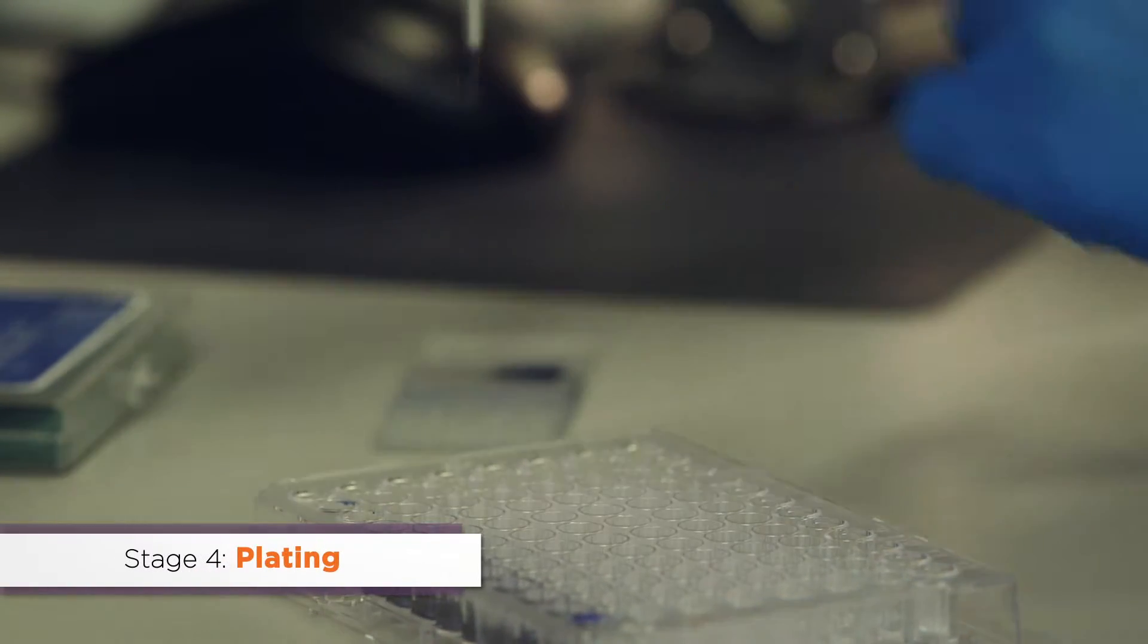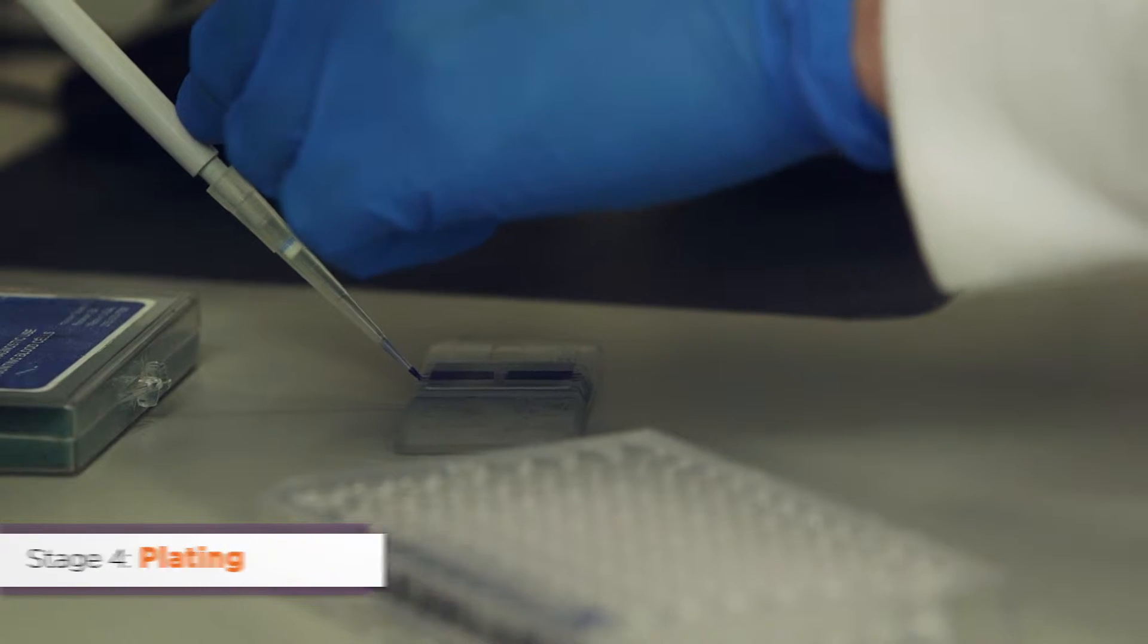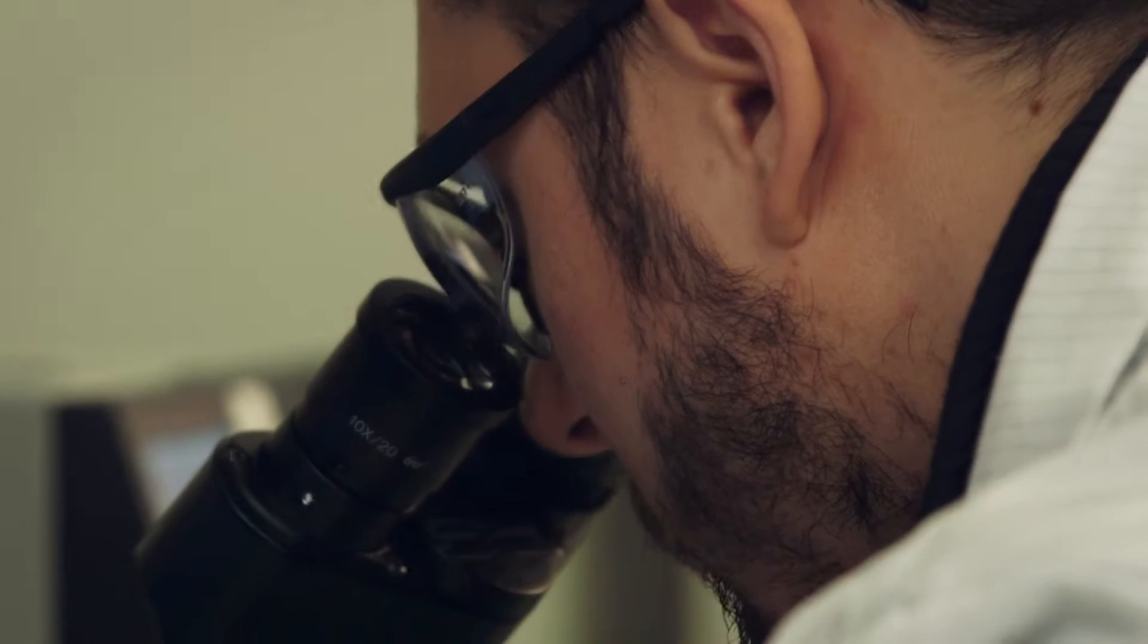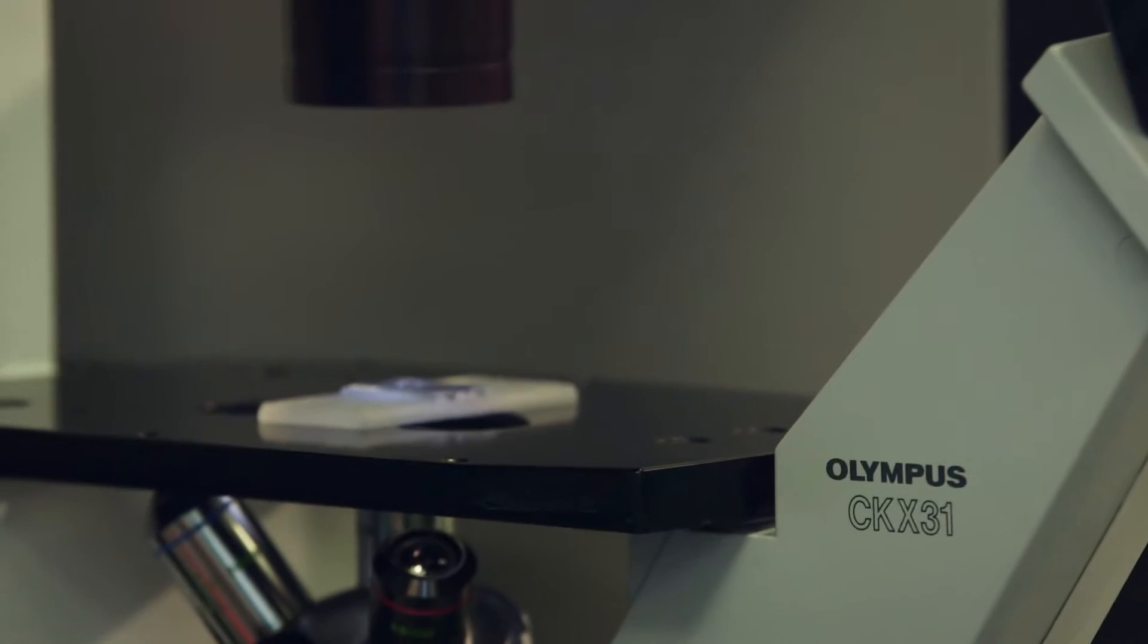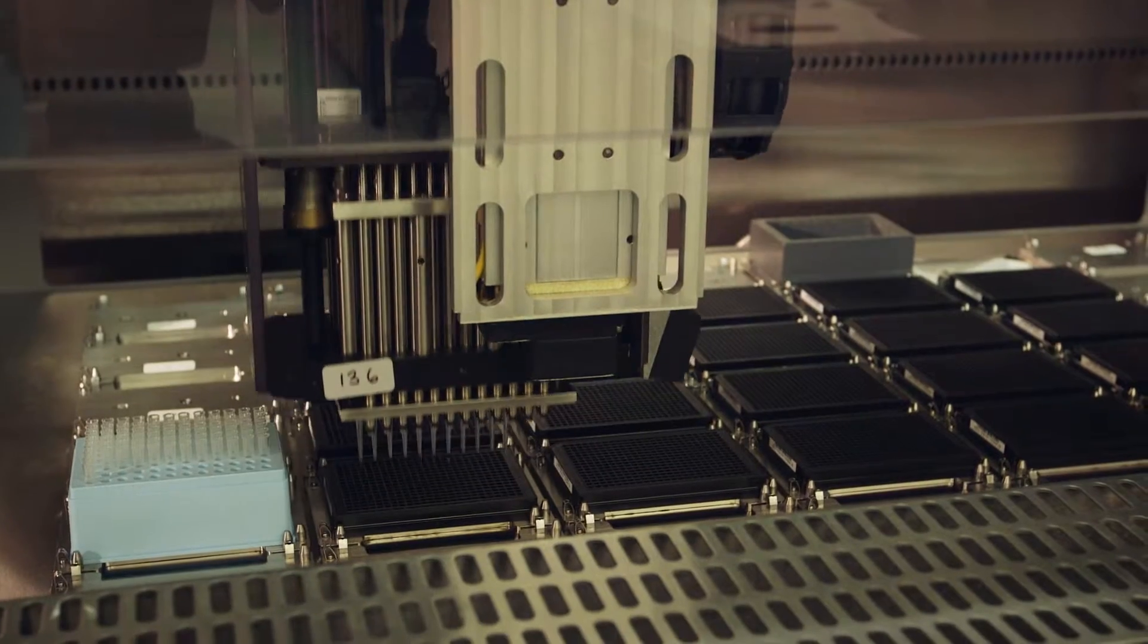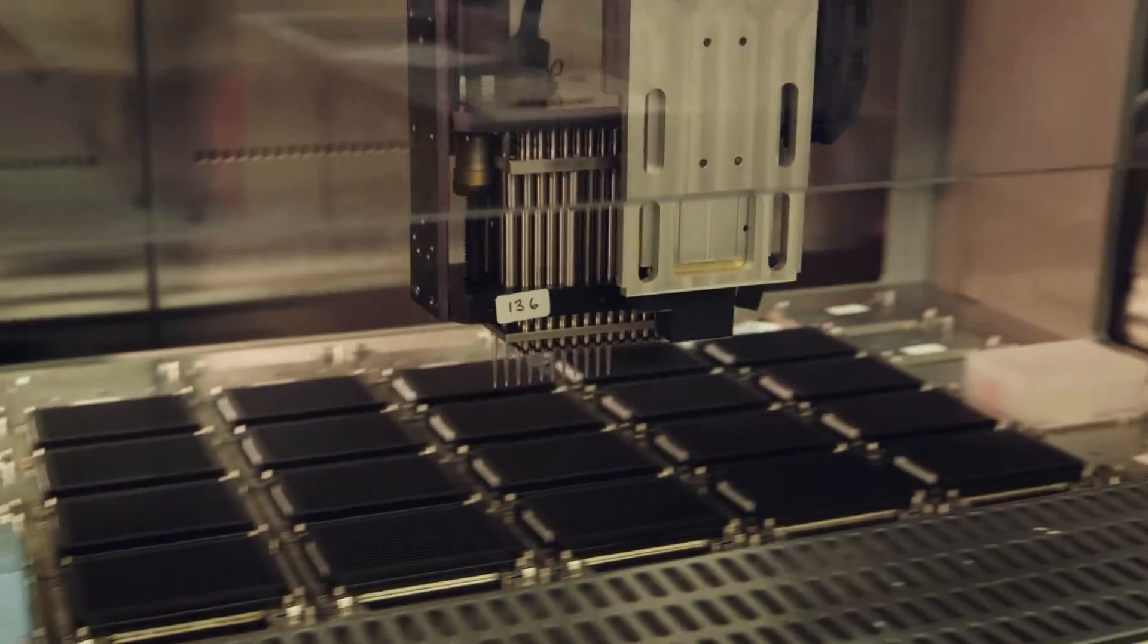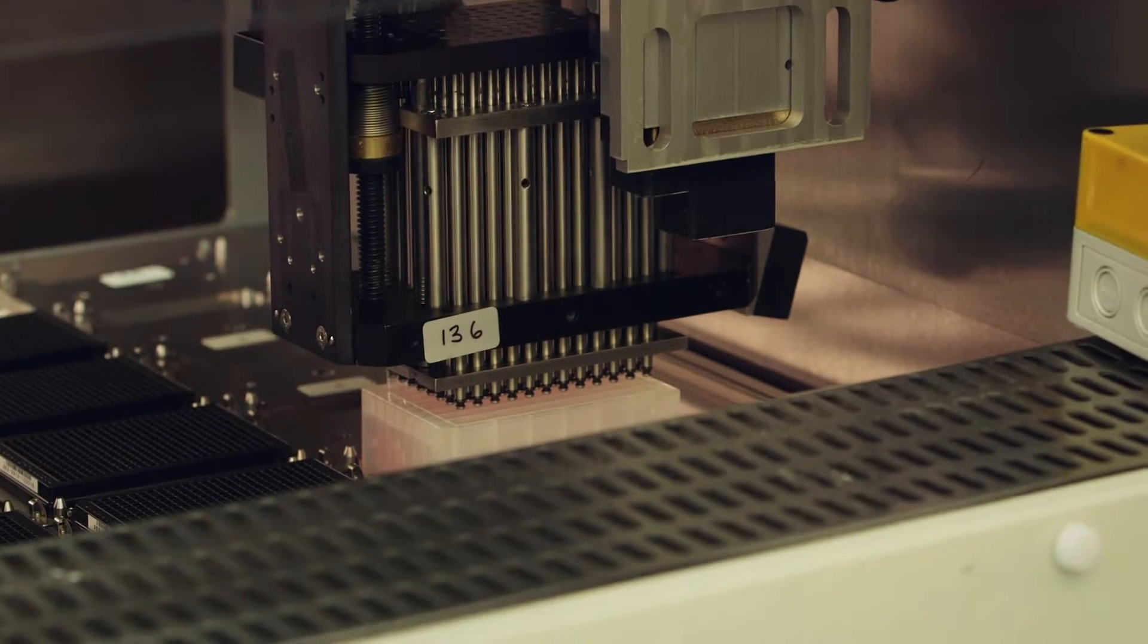For testing, each assay is plated in triplicate using 384 well plates. At plating, a technologist will assess the culture once more to ensure there are enough healthy cells and that no contamination is present. Each case is plated using Helomics automated liquid handlers. This automated system removes chances of human error at this critical step in the process.